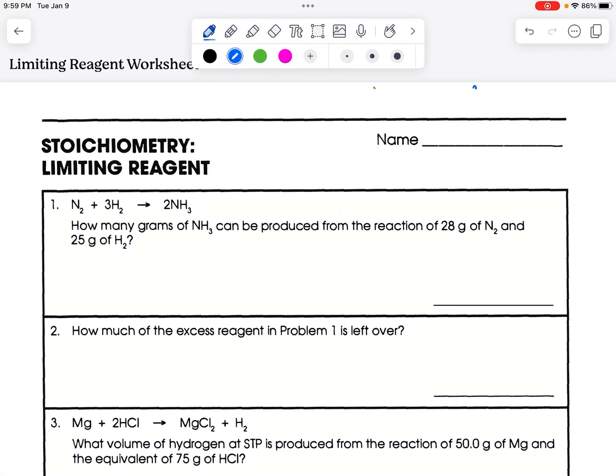Okay, welcome to the limiting reagent worksheet. Make sure you have a reference table and a calculator handy. The first two were the ones from the notes, but we'll go over them anyways. So the first one is a balanced chemical reaction. It says how many grams of NH3 can be produced in the reaction of 28 grams of nitrogen and 25 grams H2. It's going to get a little tight, but we'll try.